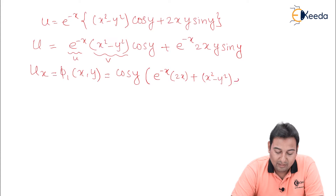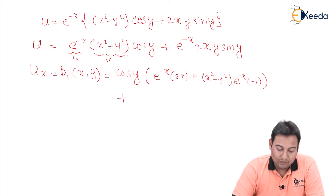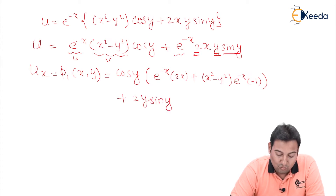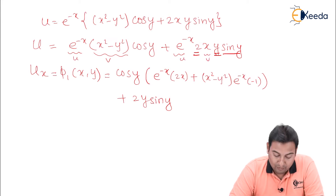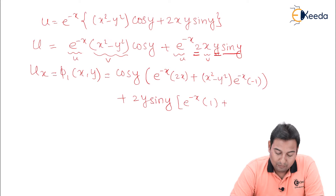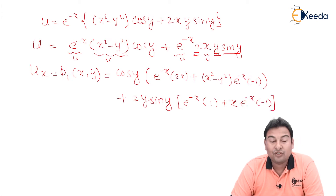Then plus v as it is, that is (x squared minus y squared), times the derivative of e raised to minus x, which is e raised to minus x into minus 1. For the second term, the derivative with respect to x gives e raised to minus x times 2y sin y, plus e raised to minus x times 2y sin y, with the x-derivative contributing 1. This completes the differentiation of u_x.